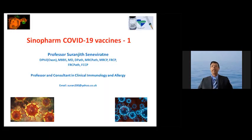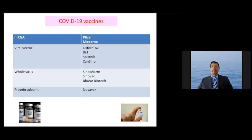The Sinopharm COVID-19 Vaccine, Part 1. There are different vaccine constructs for COVID-19, including the Viral Vector Vaccine, which includes Oxford-AstraZeneca, J&J, Sputnik, and CanSino; the mRNA vaccine, which includes Pfizer and Moderna; the whole virus vaccine, which includes Sinopharm, Sinovac, and Bharat Biotech; and finally the protein subunit vaccine, with Novavax as an example.